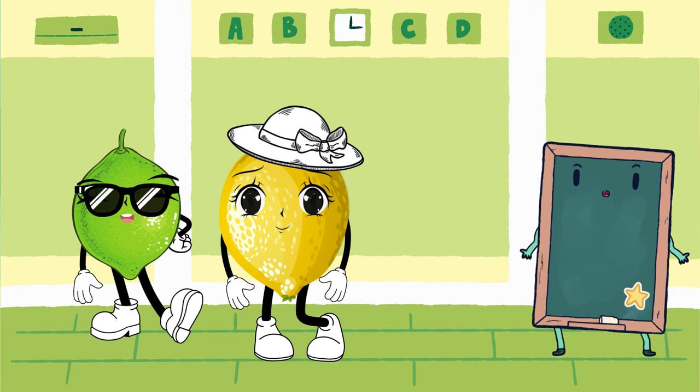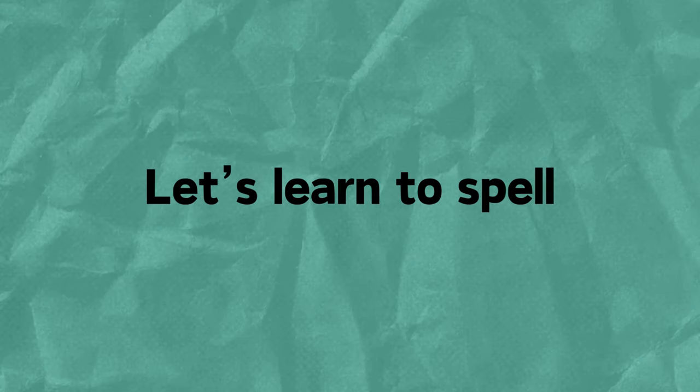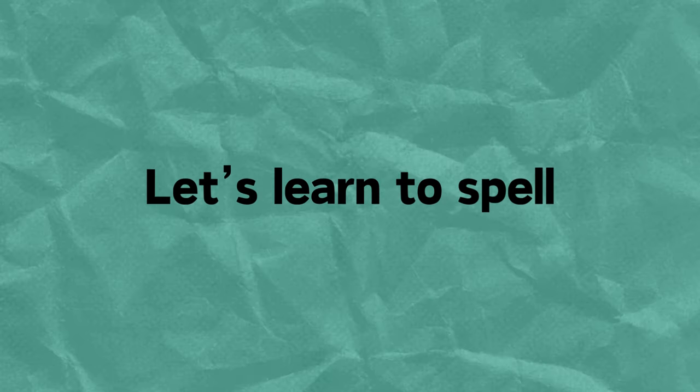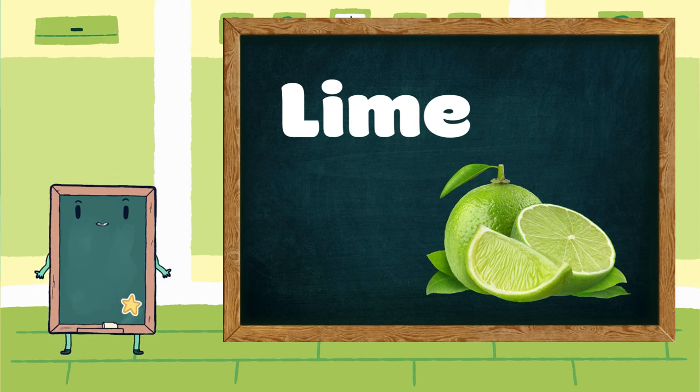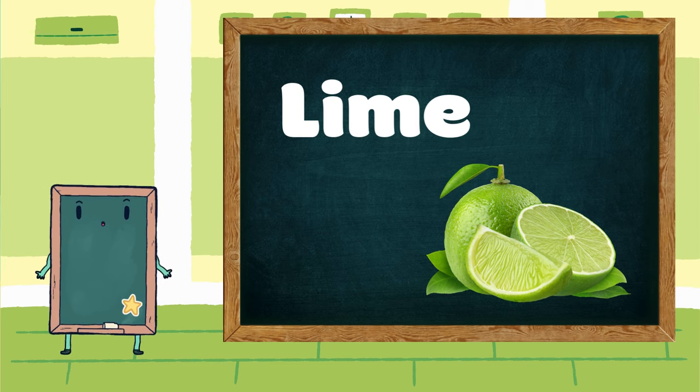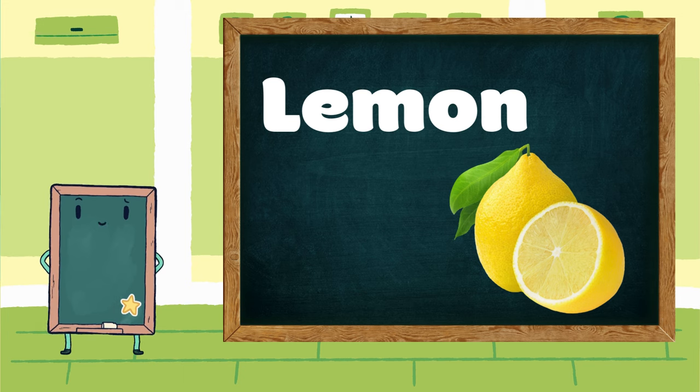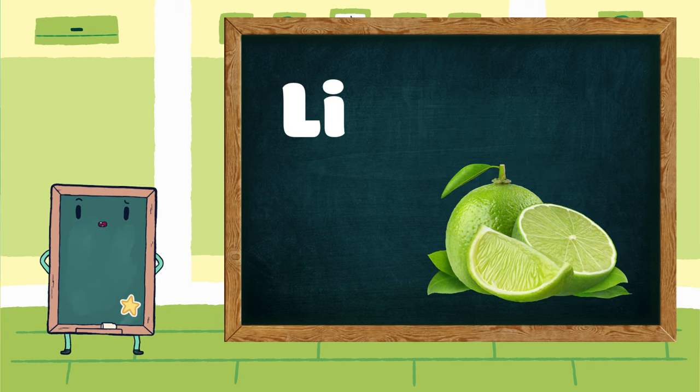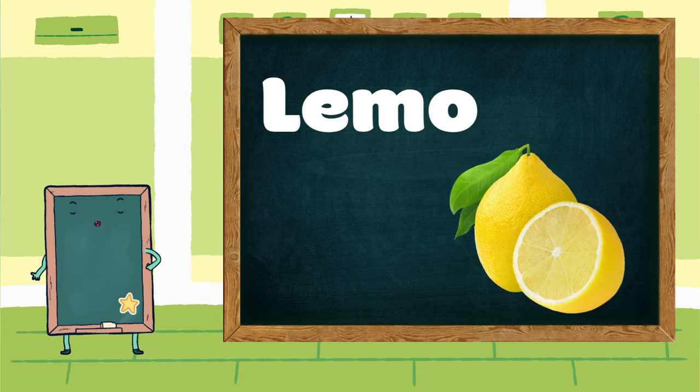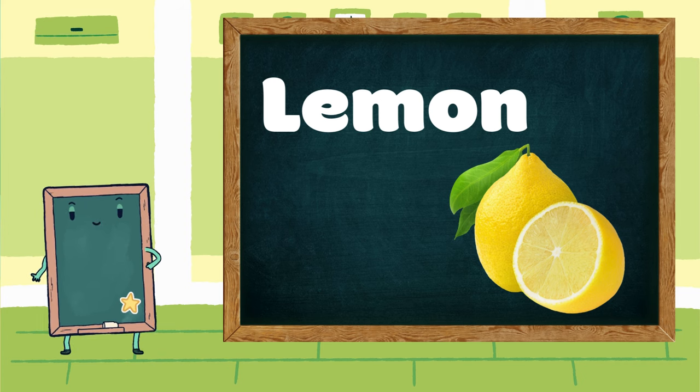Now let's learn how to spell your name! Let's spell together. L-I-M-E, Lime. L-E-M-O-N, Lemon. Again, L-I-M-E, Lime. L-E-M-O-N, Lemon. Great job, everyone!